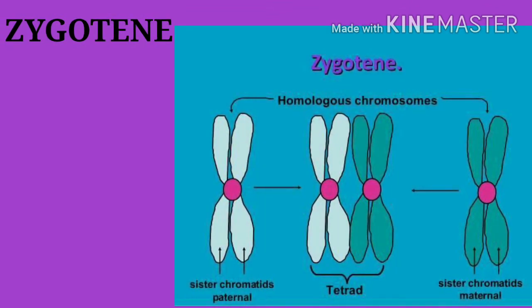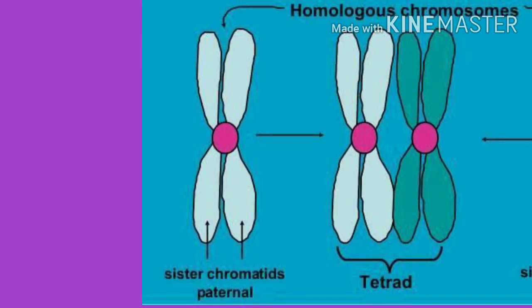Zygotene is characterized by pairing of homologous chromosomes. Pairs of homologous chromosomes are called bivalents. In pachytene stage, due to increased attraction, homologous chromosomes tightly coil around each other. Both chromatids of each chromosome become distinct. Each chromosome in a bivalent at pachytene stage has two chromatids, so the bivalent consists of four chromatids and is called a tetrad. Both chromatids of a chromosome are called sister chromatids.